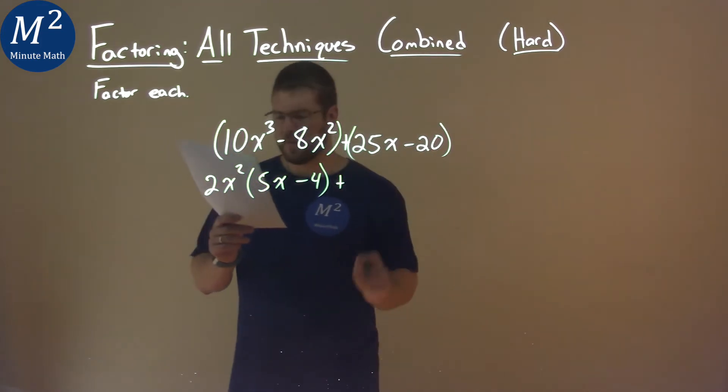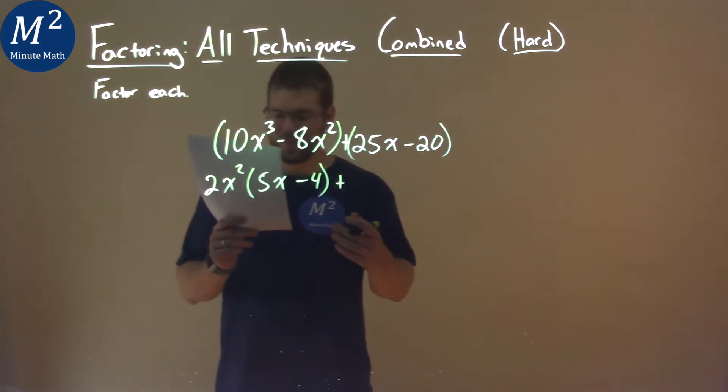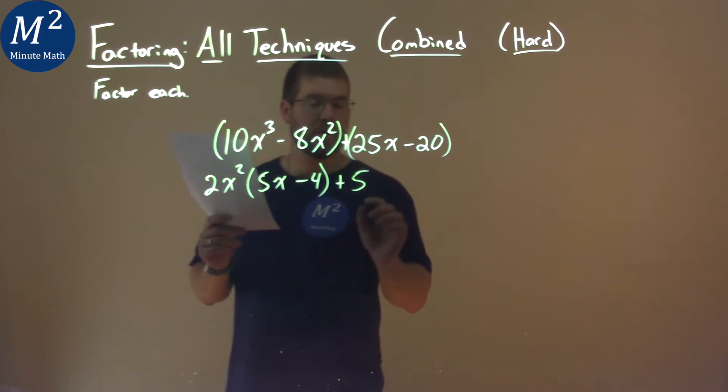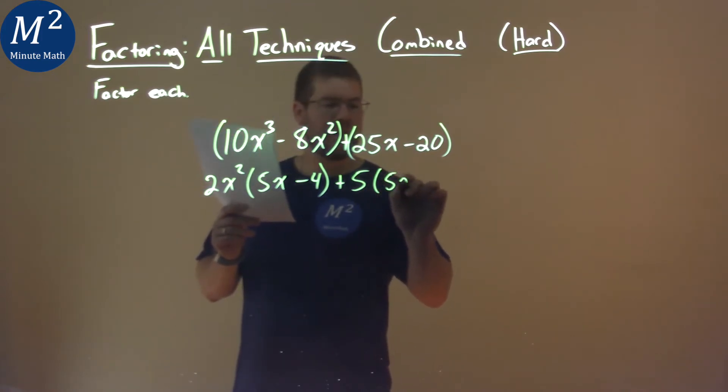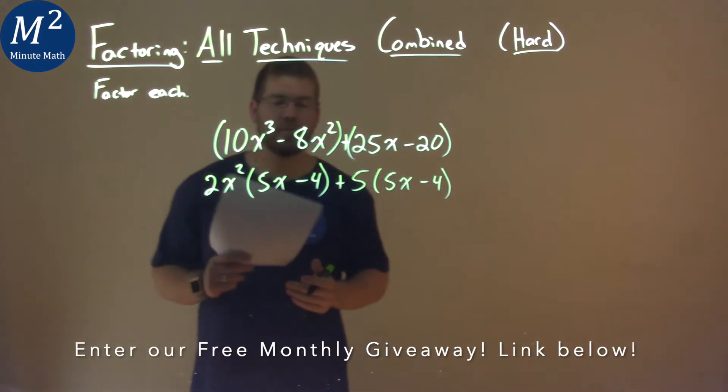Do the same thing with the second two numbers. Is there a common number in both of them? That's 5. Pull out a 5 and we have a 5x minus 4 left over.